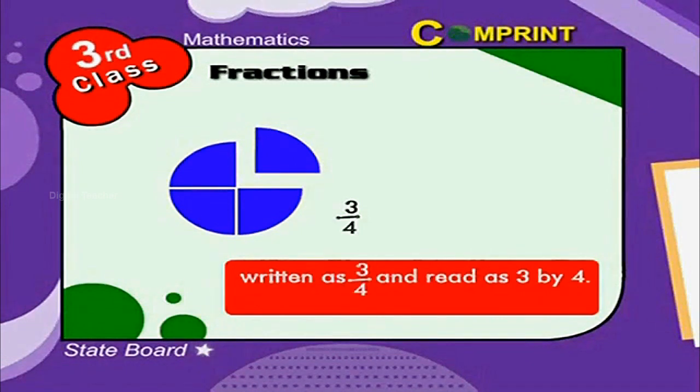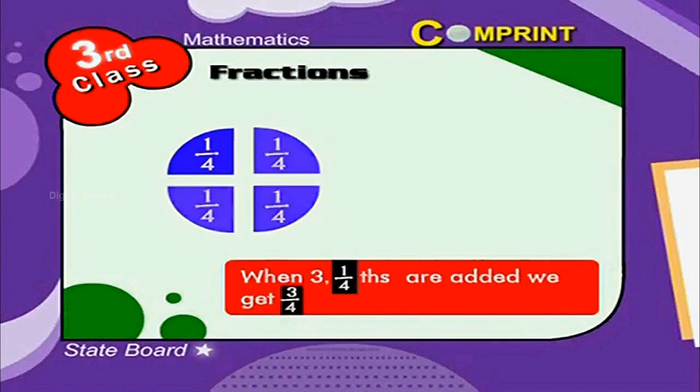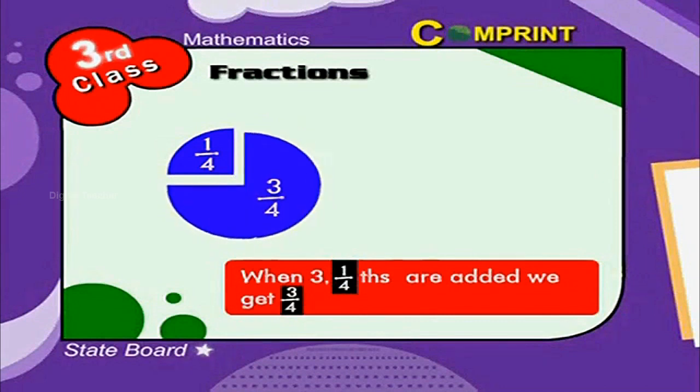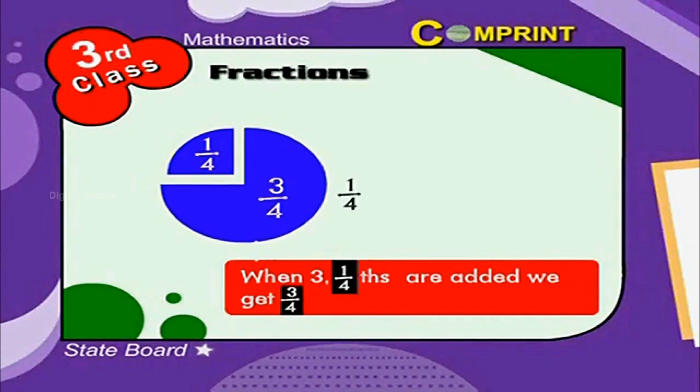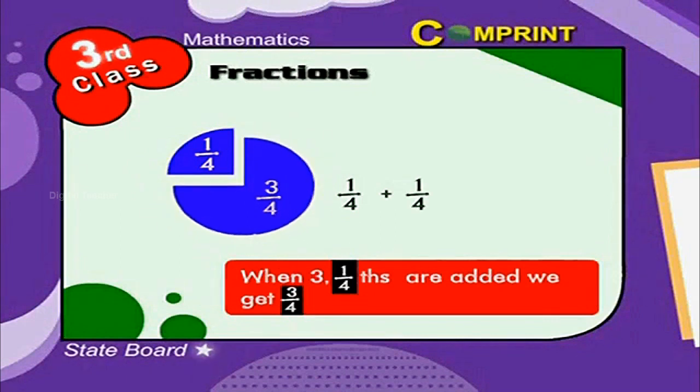and read as three by four. When three one-fourths are added, we get 3/4. Look at the example: 1/4 plus 1/4 plus 1/4 equals 3/4.